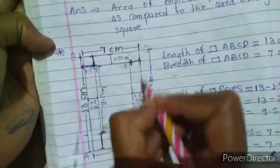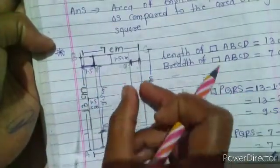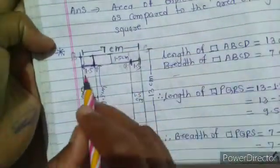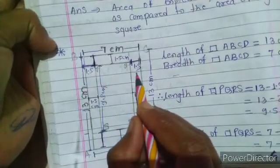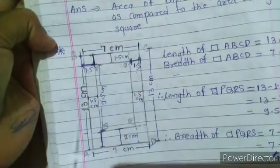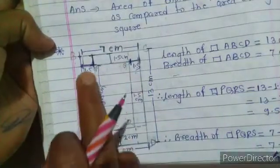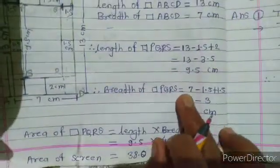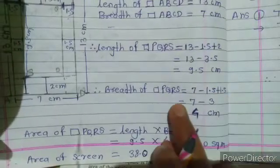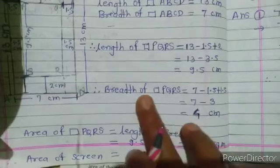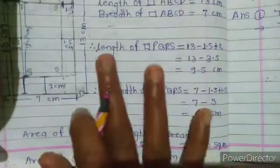For the breadth: the margins on both sides are 1.5 cm and 1.5 cm, making a total of 3 cm. So breadth of PQ is 7 minus 1.5 plus 1.5, which means 7 minus 3 cm, and we get 4 cm. So breadth of PQRS is 4 cm.